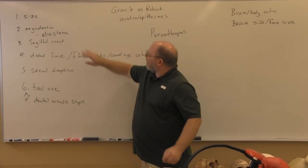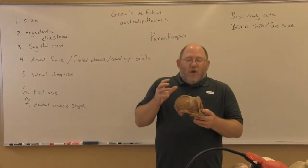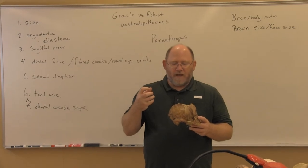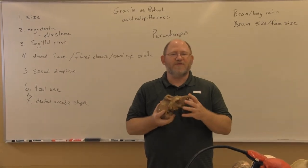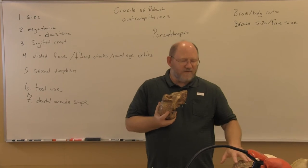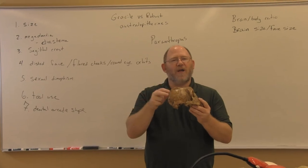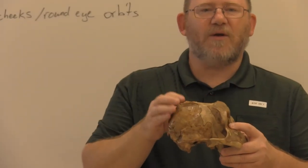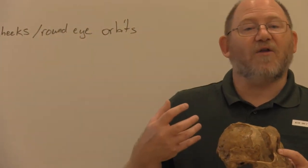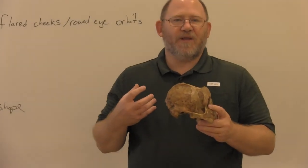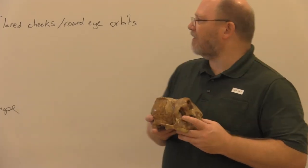The third characteristic: with robust australopithecines eating really hard foods and having much bigger teeth even than graciles, there is an extra bony growth on the top part of the skull called a sagittal crest. Robust australopithecines are the only hominid to have this, and it is one of the main ways to identify robust australopithecines from any other kind of hominid.